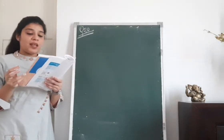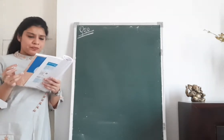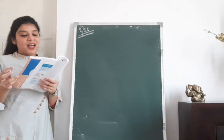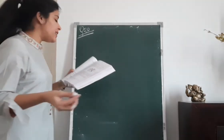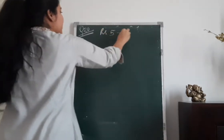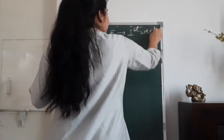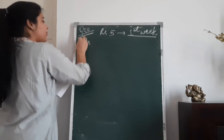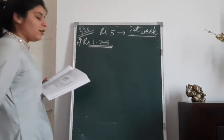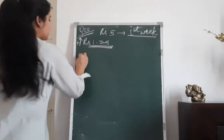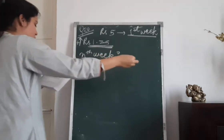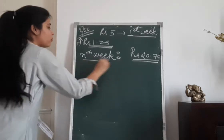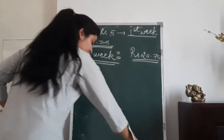Question 20: Ramakali saved rupees 5 in the first week of the year and then increased her weekly savings by rupees 1.75. If in the nth week her weekly savings become rupees 20.75, we have to find out the value of n.